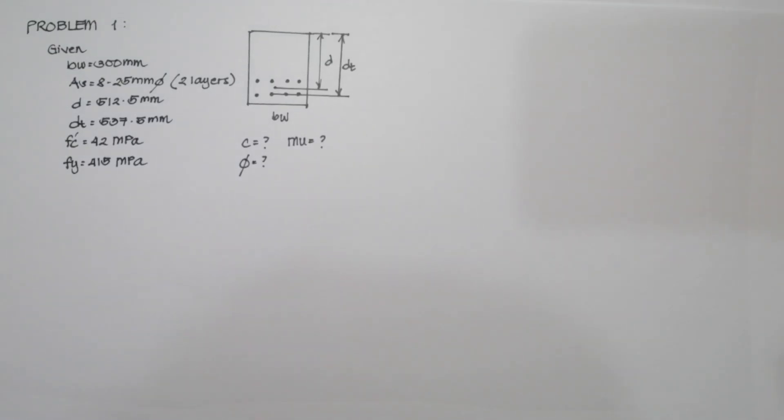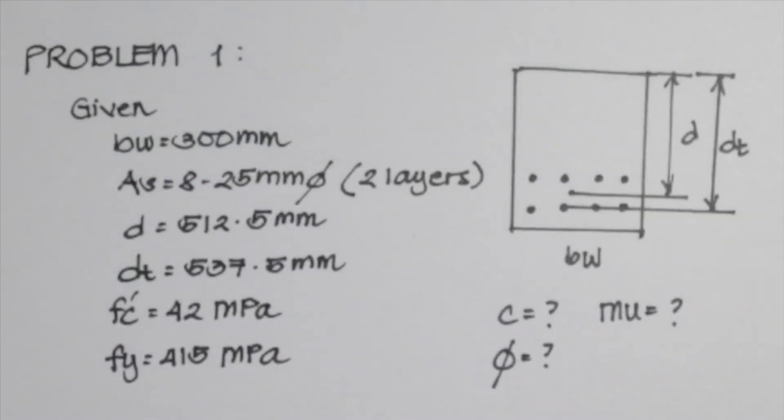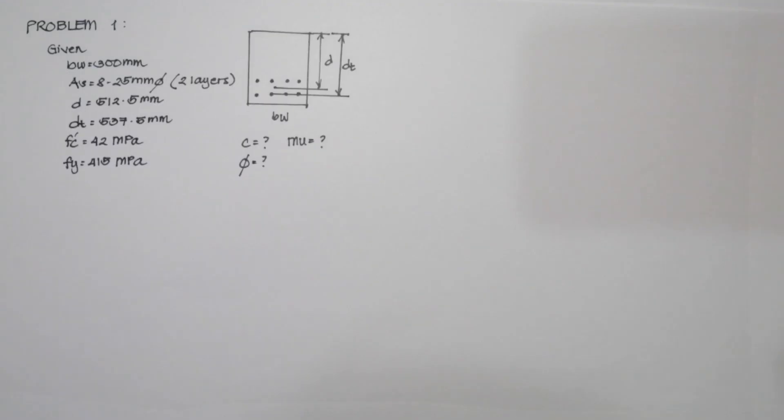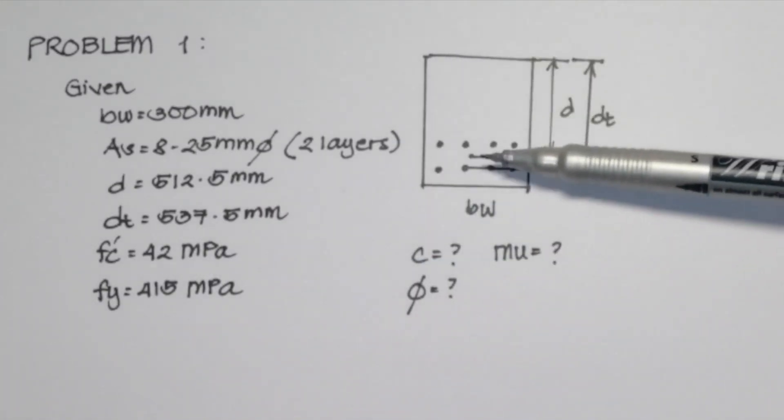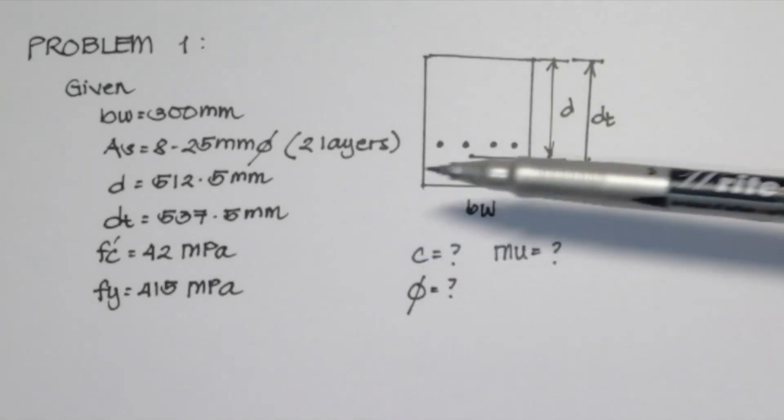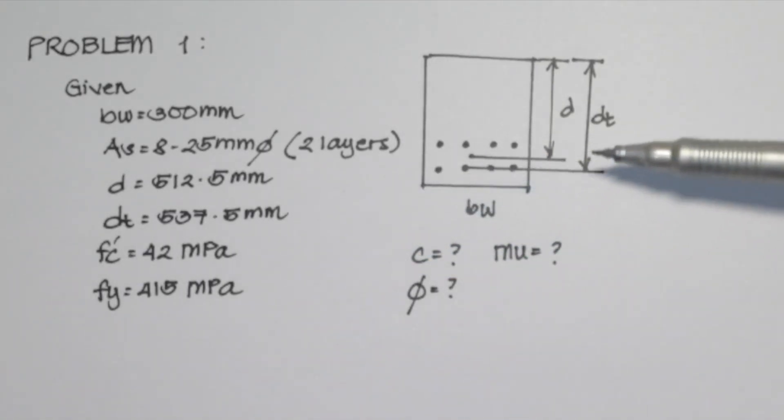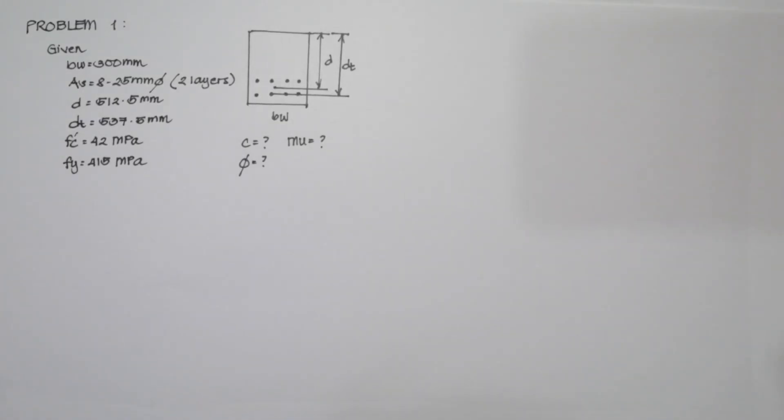Let's proceed to our first problem for the investigation and analysis of singular reinforced beams. I have here the given summarized: the base of the beam is 300mm, the area of the steel is composed of 8 25mm diameter bars in two layers, the effective depth is 512.5mm, and the effective depth from the extreme tension reinforcement is 537.5mm. The difference between D and DT is that D is measured from the centroid of the entire reinforcements, while DT is measured from the centroid of the extreme tension steel.